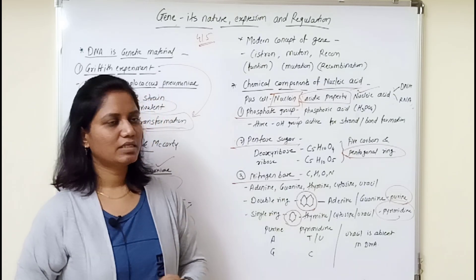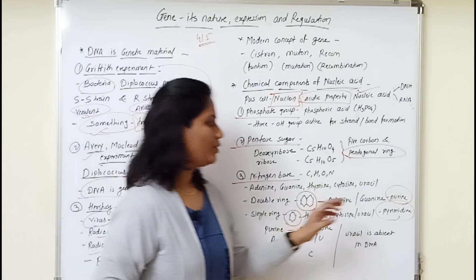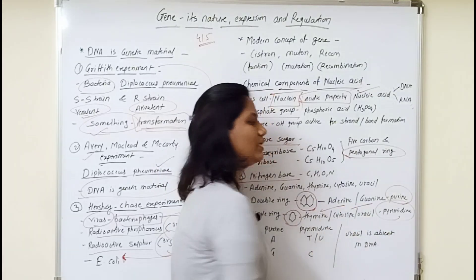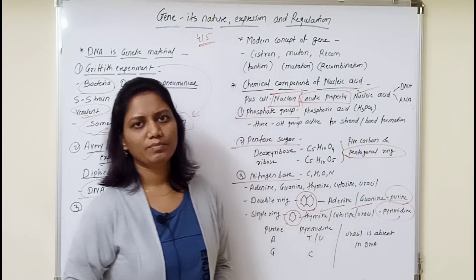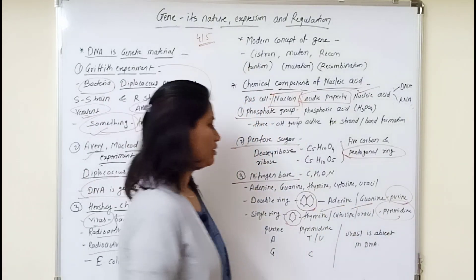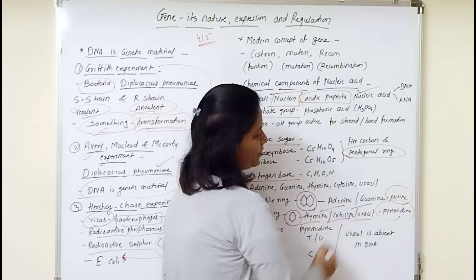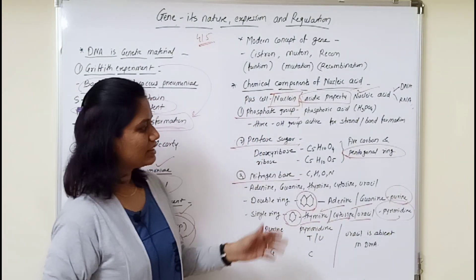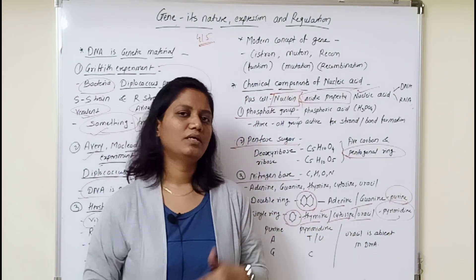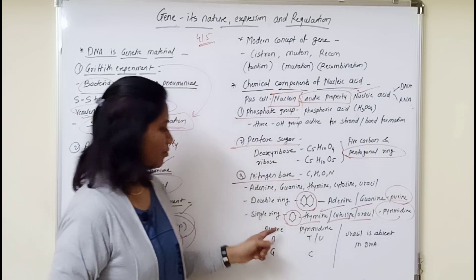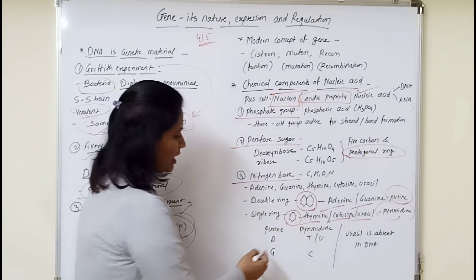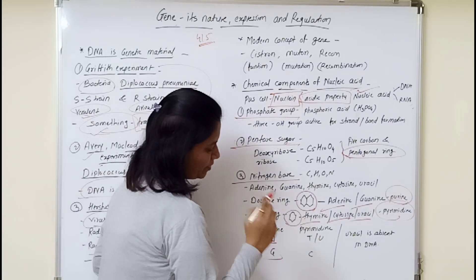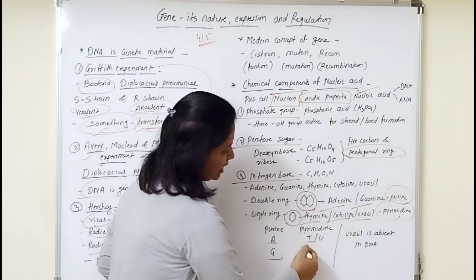We can divide the nitrogen bases into purines and pyrimidines. Purines include adenine and guanine. Pyrimidines include thymine, uracil, and cytosine. So the nitrogen bases are: adenine (A), guanine (G), thymine (T), uracil (U), and cytosine (C).